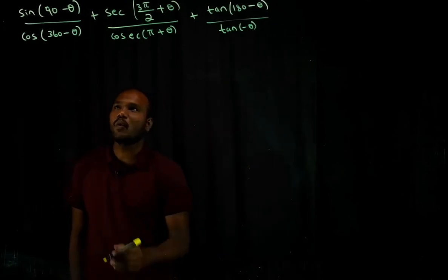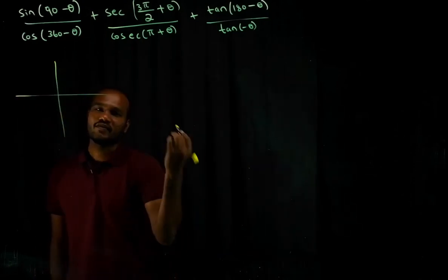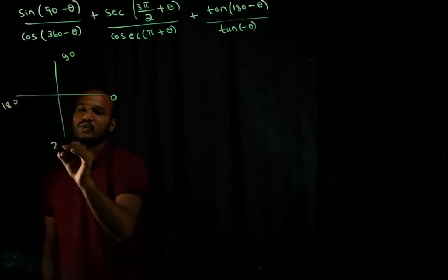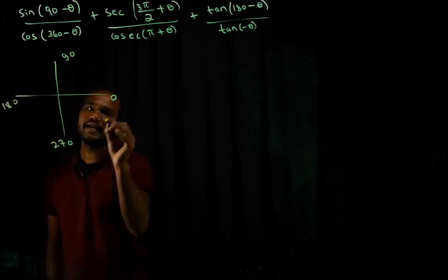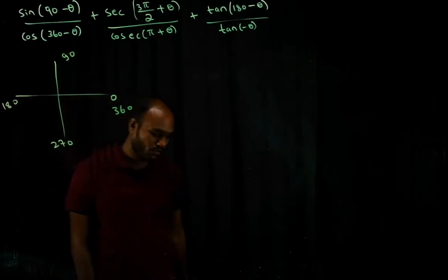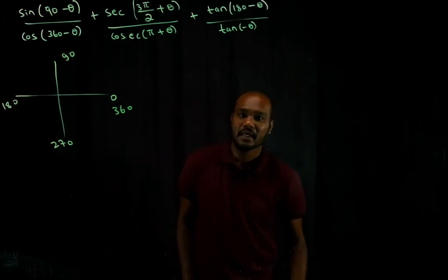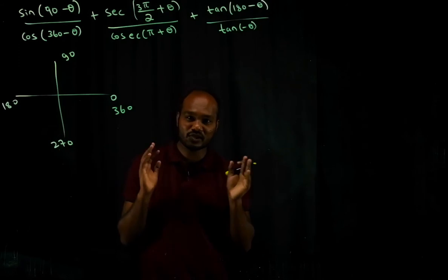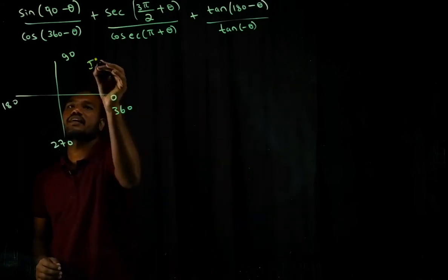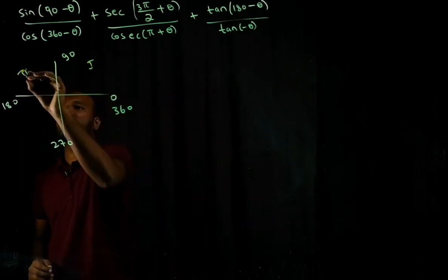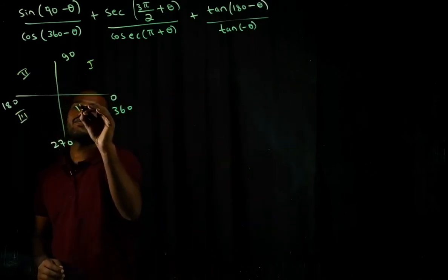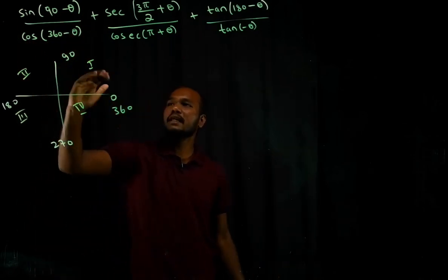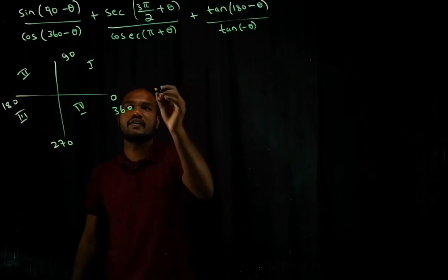To solve the next question you need to know the quadrant system. There are four quadrants: 0°, 90°, 180°, 270°, and 360°. Please check our video on the quadrant system if you're unfamiliar. Let's solve: sin(90° − θ) is in the first quadrant — complementary angle, so sine becomes cosine of θ.